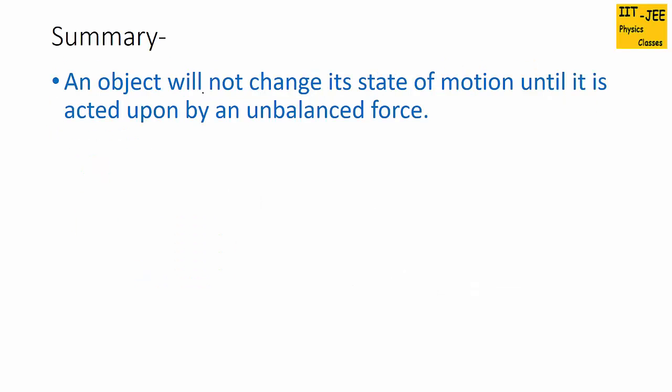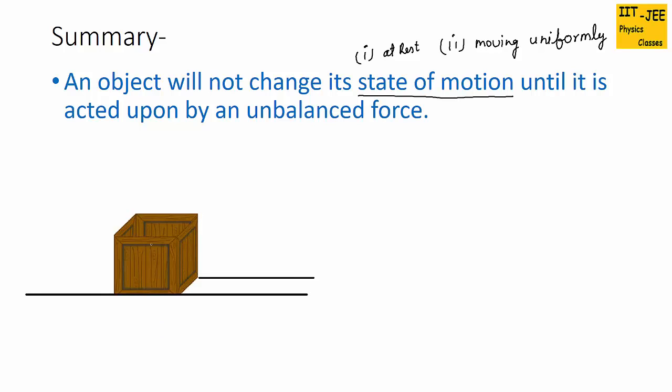Let's summarize Newton's first law. An object will not change its state of motion. State of motion means there are two states: first is at rest, and second is moving uniformly. Uniformly means it's not speeding up or slowing down, it is just moving with the same speed. So this box is currently at rest and it will remain at rest until it is pushed or pulled. The same way, if this ball is moving towards the right, it will keep moving towards the right with the same speed until it is pushed or pulled to speed up or slow down.